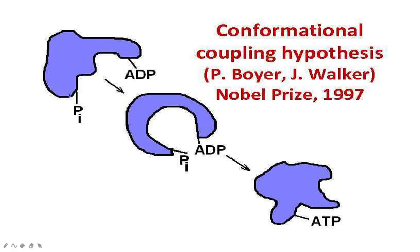The observation that conformational changes occur in the mitochondria in the presence and absence of ADP was proved to be correct. However, Boyer's claim that conformational changes alone are responsible for ATP production was proved to be wrong. His hypothesis failed to explain the mechanism of ATP formation — specifically how ADP and inorganic phosphate couple together to form ATP. Nevertheless, for discovering that conformational changes take place in mitochondria, Boyer was awarded the Nobel Prize in 1997.